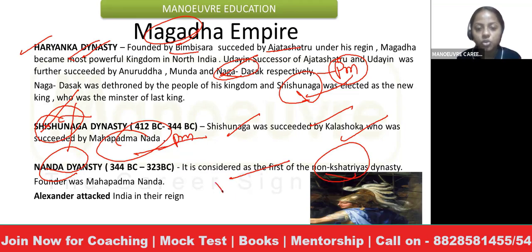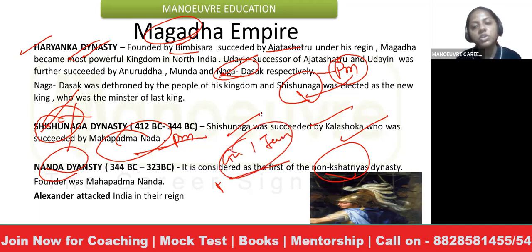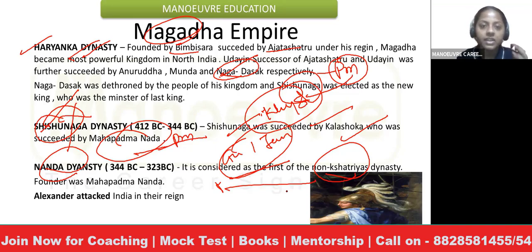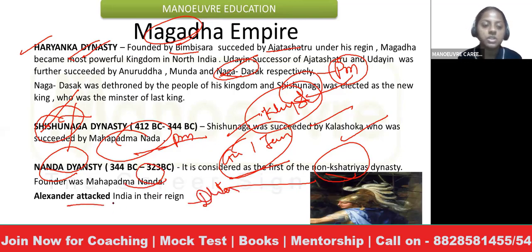The Nanda Dynasty is considered to be the first non-Kshatriya dynasty. Both Gautam Buddha and Mahavira Jain were Kshatriyas by caste, but for the first time a non-Kshatriya rose to great importance at a big level. This happened during the time of the Nanda Dynasty, especially during the reign of Ghanananda.